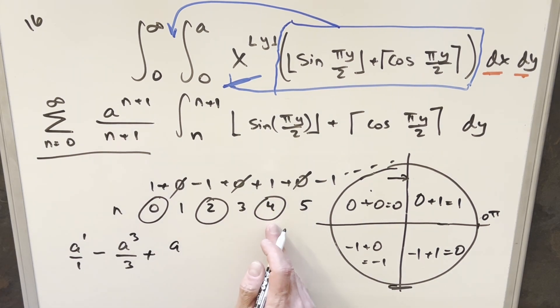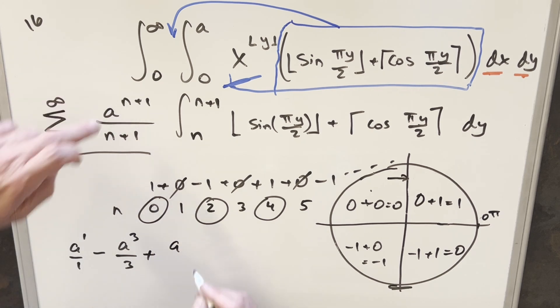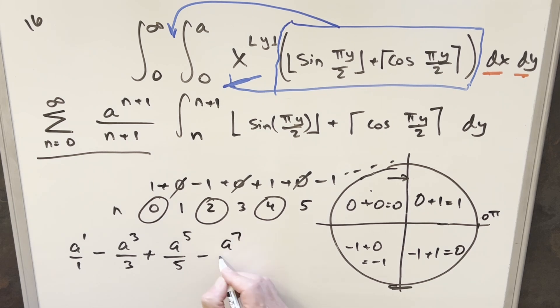We're going to have our a. This is going to be when n is four. When n is four, we're going to have a to the five over five. Then next one, we have a minus sign. We're going to have minus a to the seven over seven. It's just going to keep going with odd exponents, odd number in the denominator.